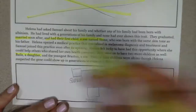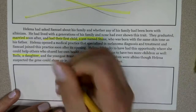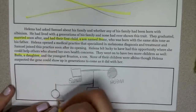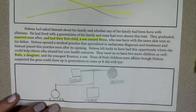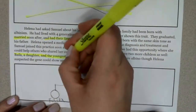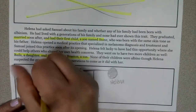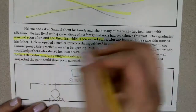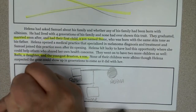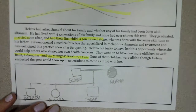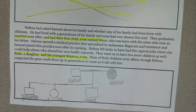Helena opened a medical practice specializing in melanoma diagnosis and treatment. They went on to have two more children: Byla, a daughter, who gets a circle; and the youngest son Braxton, who gets a square. None of their three children had albinism, though Helena suspected the gene could show up in generations to come.